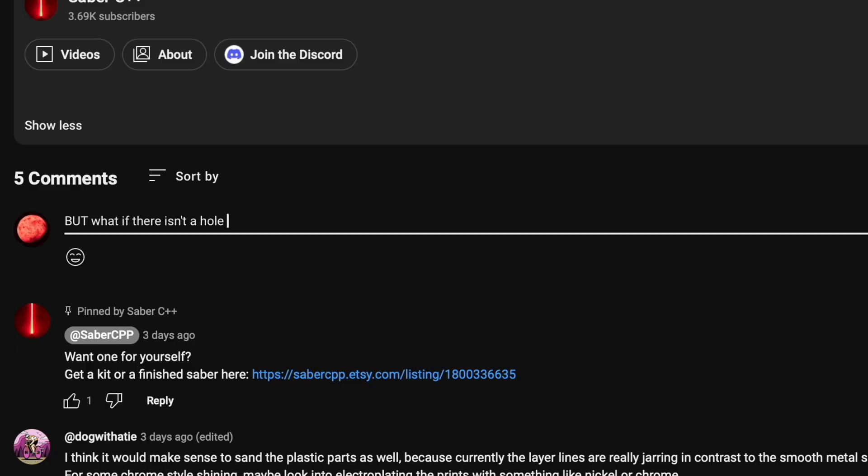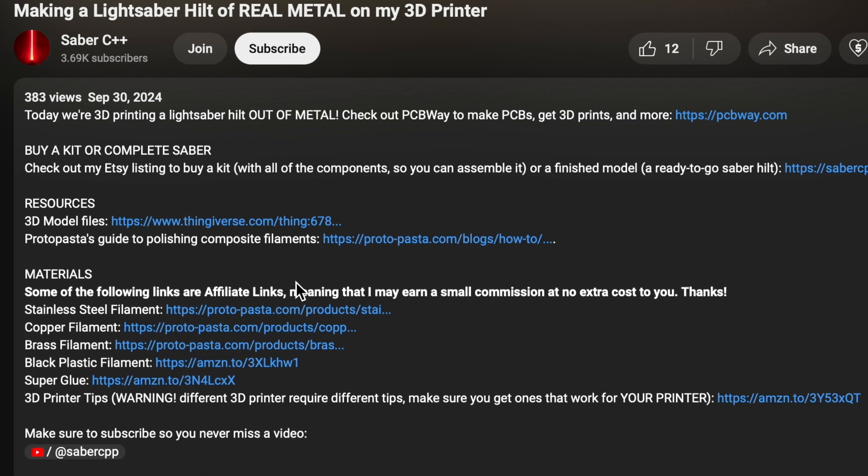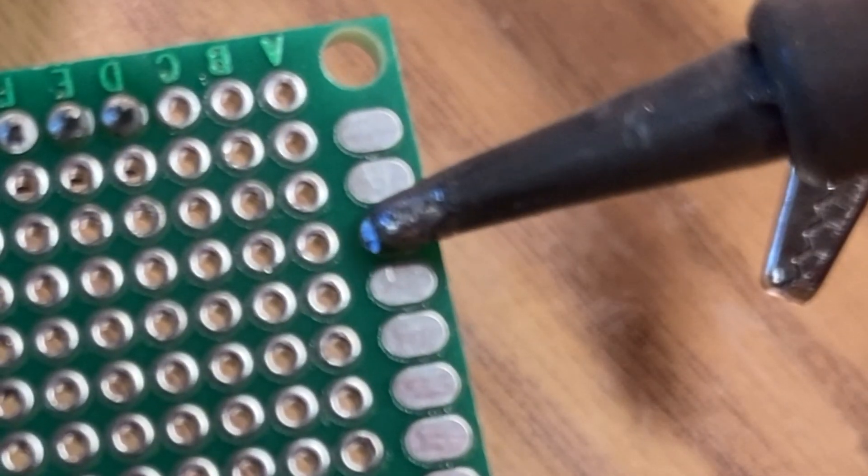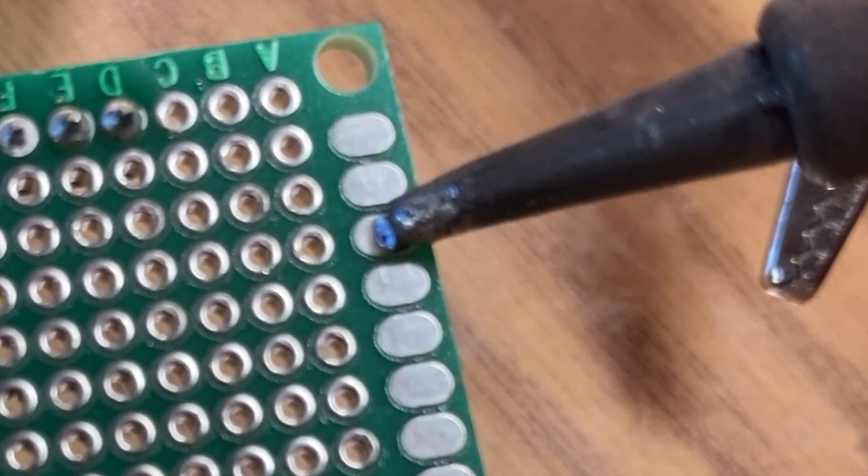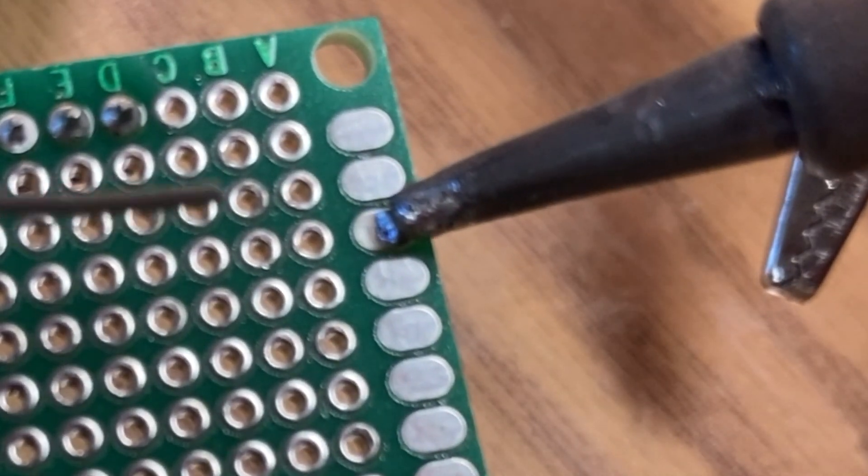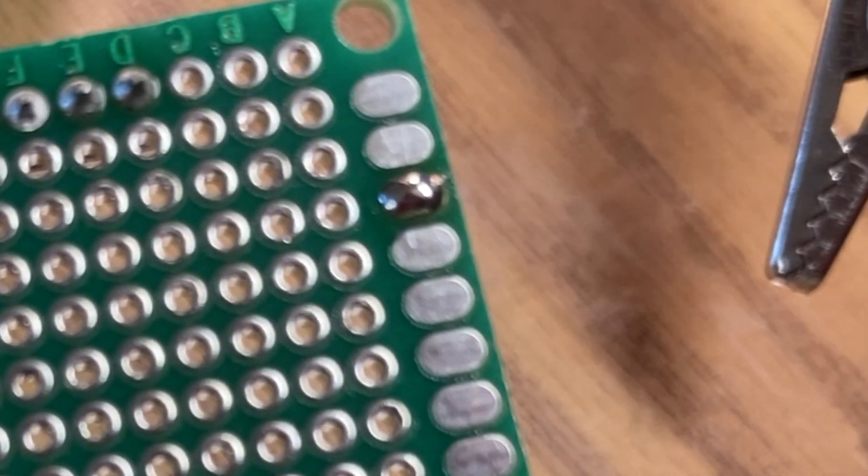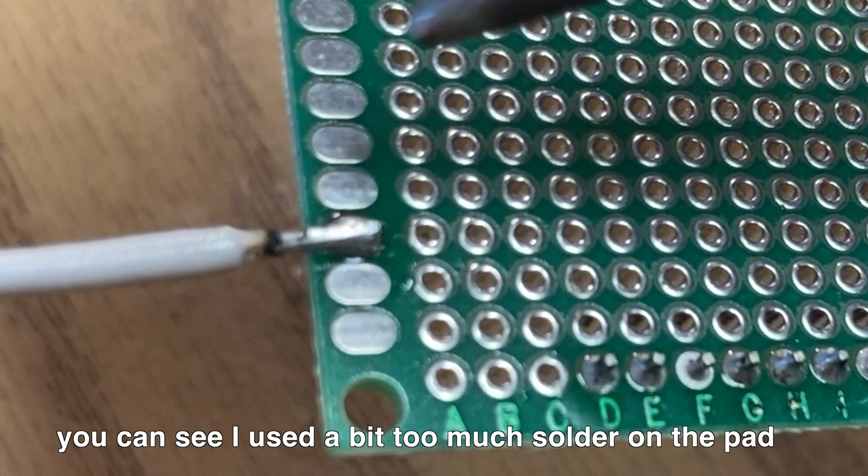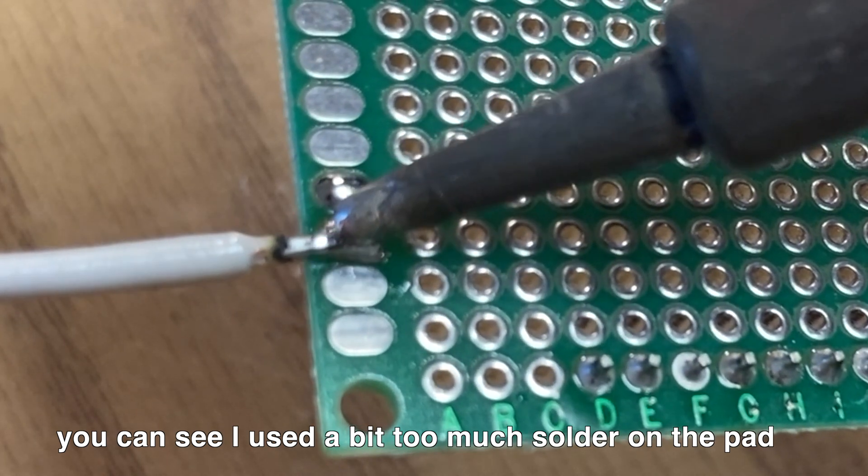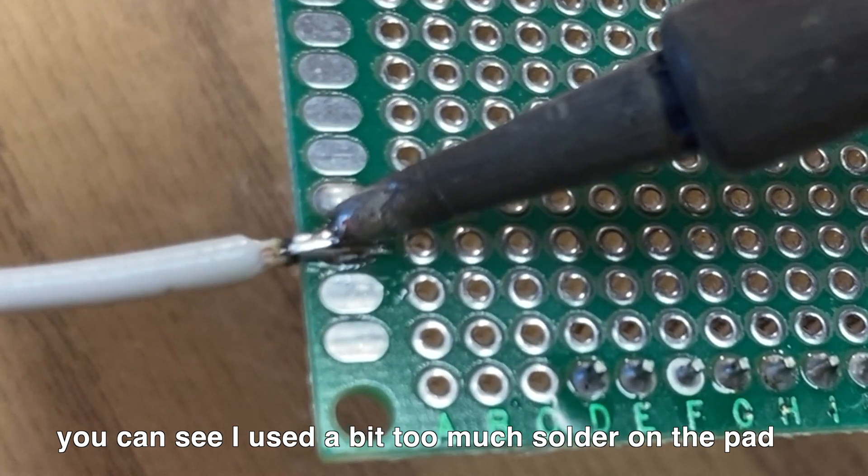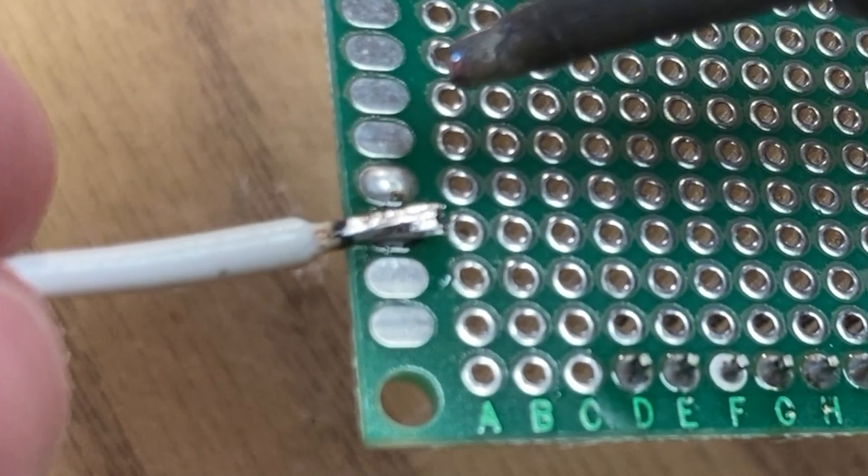But what if there isn't a hole in the PCB? I hear you frantically typing into the comments section. Well, hit the subscribe button on your way back up because I'm going to show you that too. Again, you'll want to tin your wire, but you'll also want to tin the pad you're attaching the wire to. So touch your iron to the pad, let it heat up, bring in some solder and cover the pad with a little puddle of solder. Now attaching the wire is as simple as placing it on top, placing the iron so it's touching the tinned wire and the tinned pad, and letting the heat meld them together. Perfect.